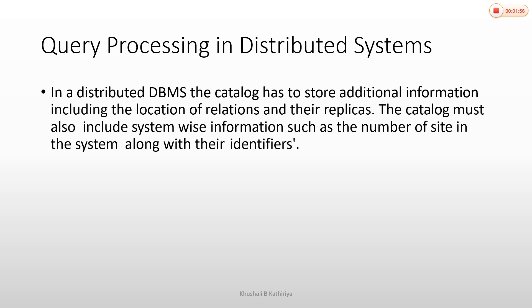Multiple sites can store the same data — replicas, copies, or clones — at the same or different sites. The catalog keeps track of all this: which tables are at site one, which replicas are at site two, which tables are at site three, and so on.